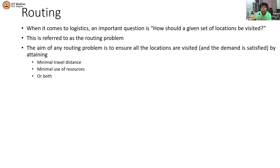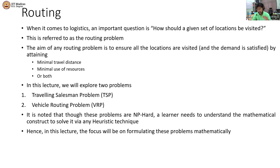This is ensured while we attain either the minimum transport time or transport distance, or minimum use of resources — the number of vehicles available — or both. That is in general the crux of a routing problem. There are several routing problems, and for this lecture we are going to discuss two of them: the first is the Travelling Salesman Problem (TSP) and the second is the Vehicle Routing Problem (VRP).